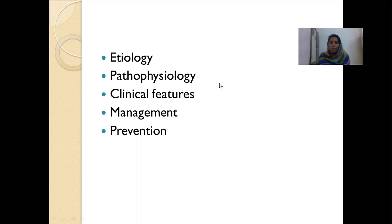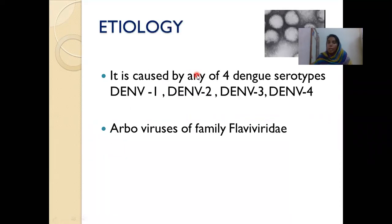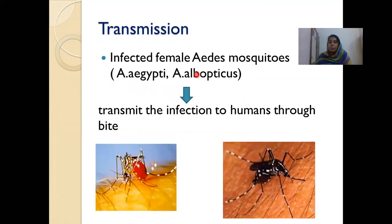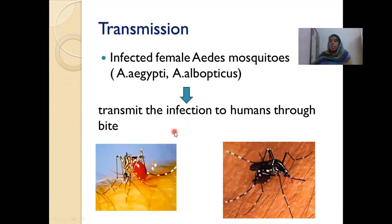Coming to the etiology, as you all know, the etiology is dengue virus which are of four serotypes — dengue virus 1, 2, 3, or 4. They are arboviruses belonging to the family Flaviviridae. They are transmitted by the bite of infected female Aedes mosquitoes — it can be either Aedes aegypti or Aedes albopictus. This is the Aedes aegypti, the black one, which was found to cause Hawaiian epidemics in 2001 and 2015.